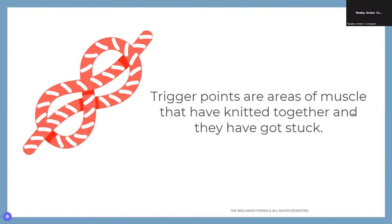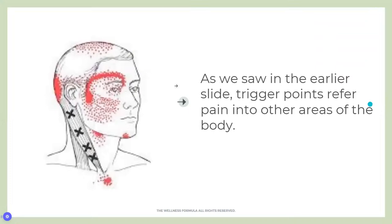Let's take it back a bit and think about what trigger points are. Trigger points are bits of muscle fiber that have gotten knitted together and stuck. When a muscle contracts, the fibers join together — trigger points form when those fibers don't release again, creating what we might know as a knot in a muscle. Other fibers can draw into that and make the situation worse. We can get trigger points in all sorts of muscles, including the tiny muscles of the jaw.